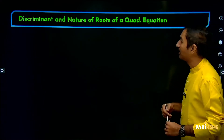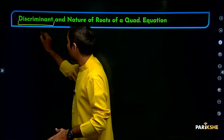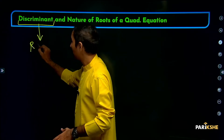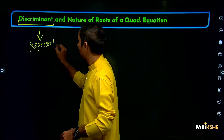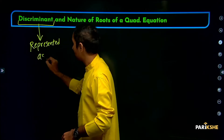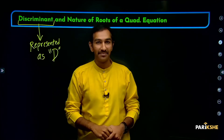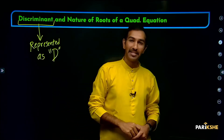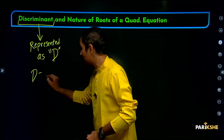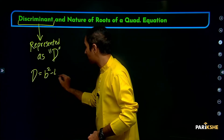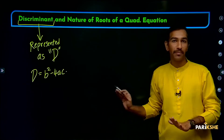Discriminant and Nature of the Roots. Discriminant is represented by capital D. D is equal to B square minus 4ac.